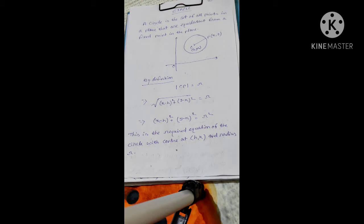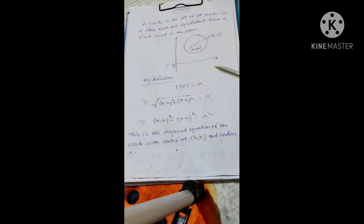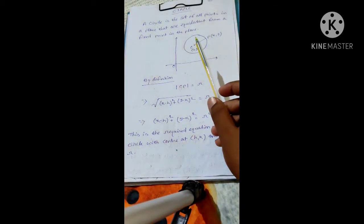Friends, today we are going to discuss about circle. In class 11, there are three topics based on the conic section: circle, ellipse, hyperbola, and parabola. I have already discussed parabola, so today we are going to discuss about circle.